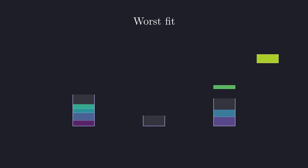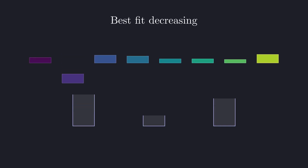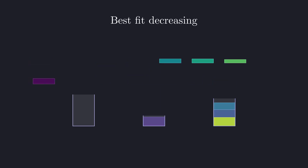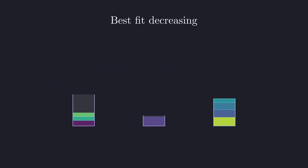Worst fit does the opposite and assigns weights to the bins with the most capacity. This may sound like a bad idea but sometimes it can be effective — the algorithm tends to balance weight distributions so that it leaves a little bit of room in all of the bins, meaning you pack your bags evenly instead of filling them up one by one. For all of these algorithms you can also first sort the weights in decreasing order, which means starting with the biggest items first.